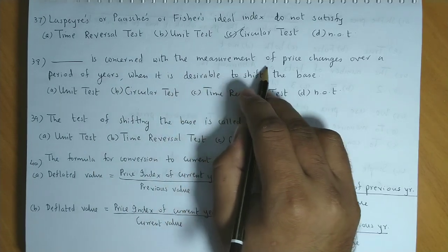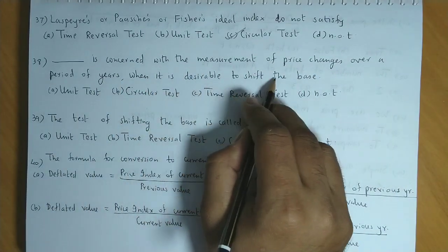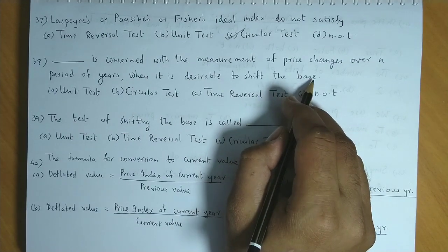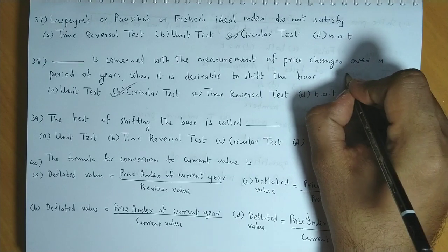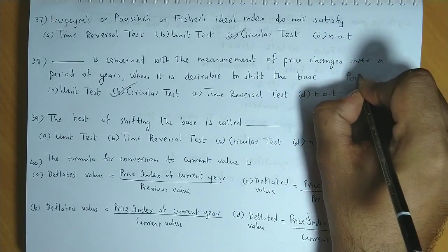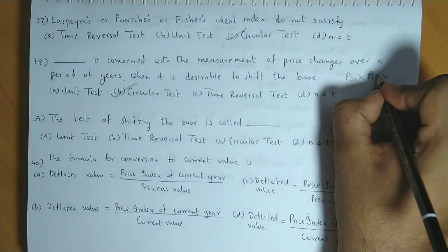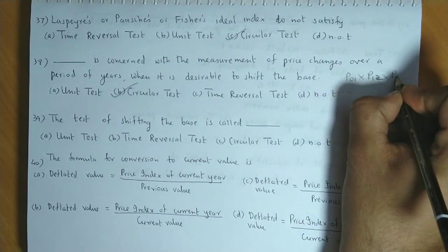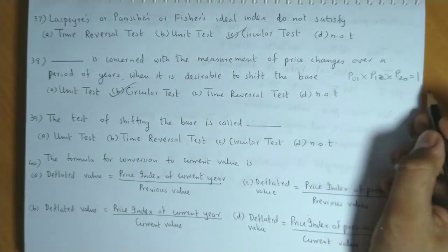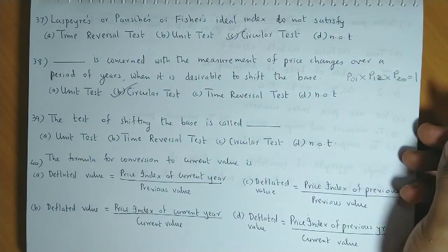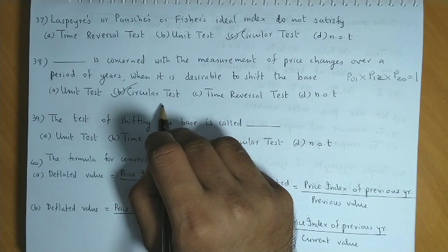Dash is concerned with the measurement of price change over a period of years when it is desirable to shift the base. Base shifting ka concept use hota hai circular test mein. Right, because if you remember the condition, it is P01 into P12 into P20, yeh product aana chahiye one. So basically haan bhi hum base here shift kar rahe hai, correct. So is ka answer hai option B, that is the circular test.